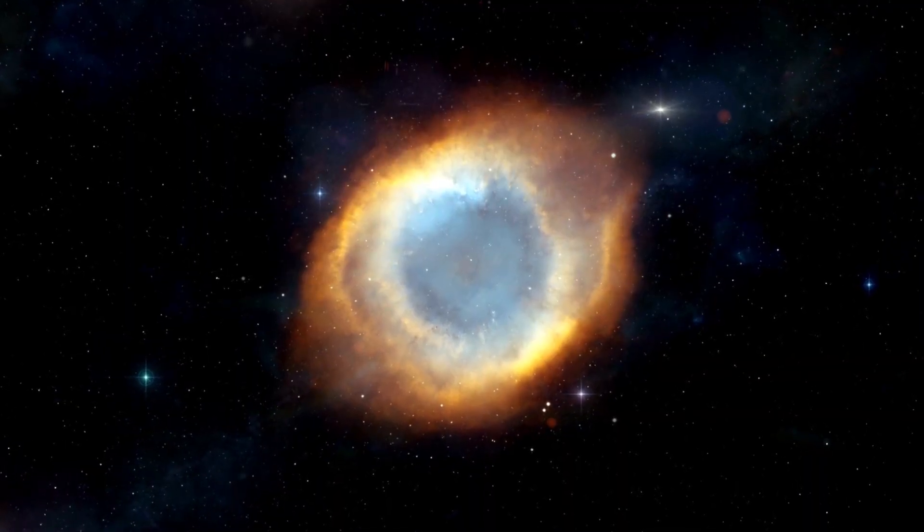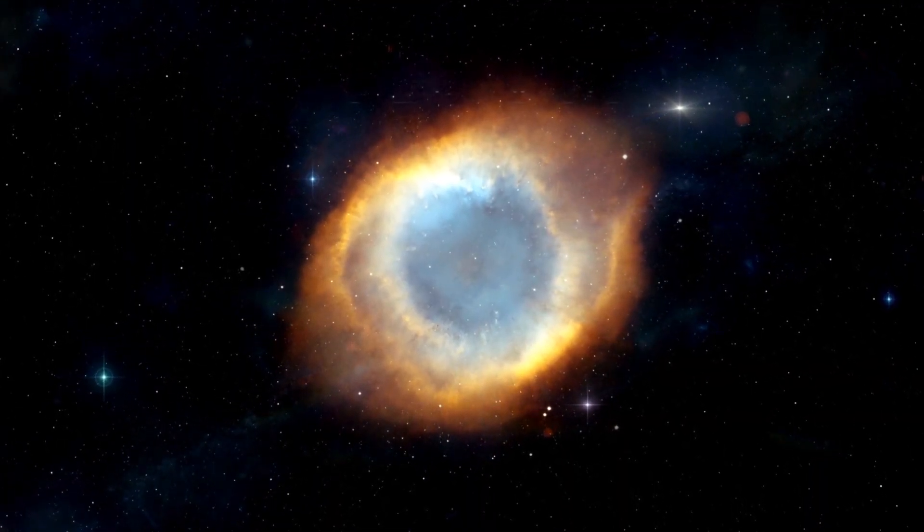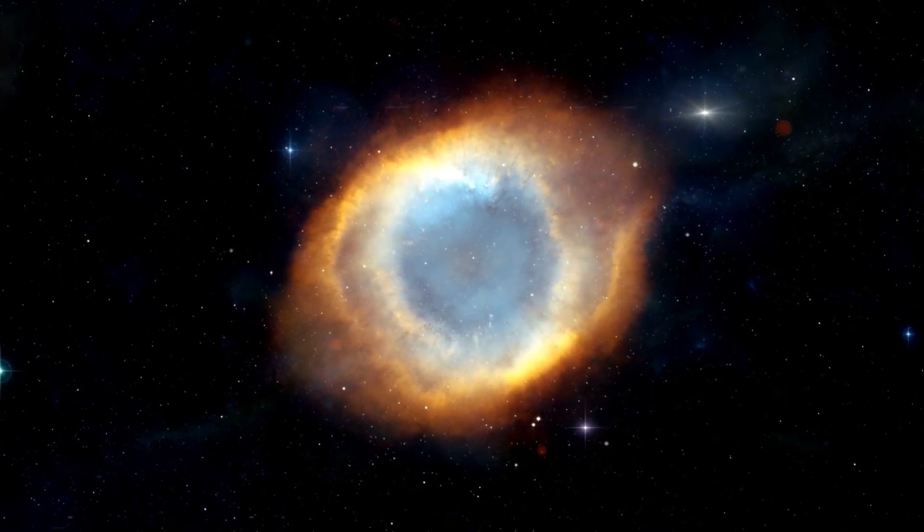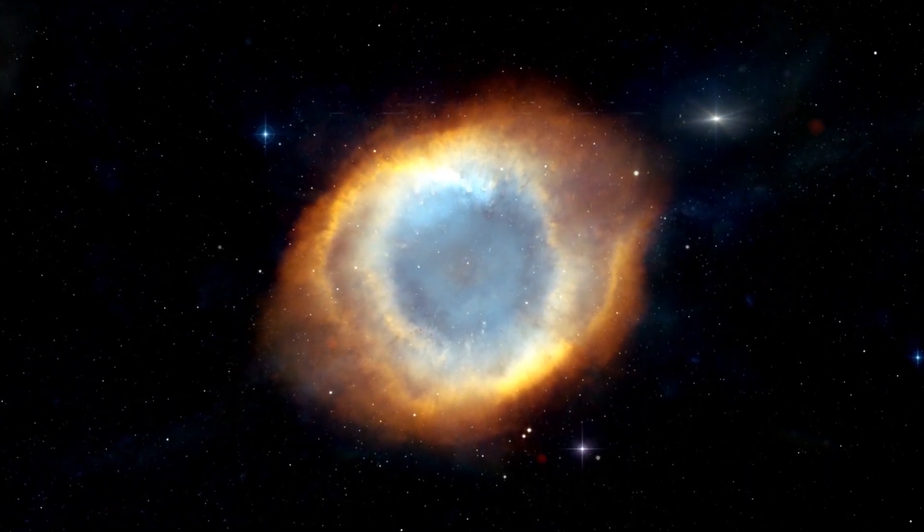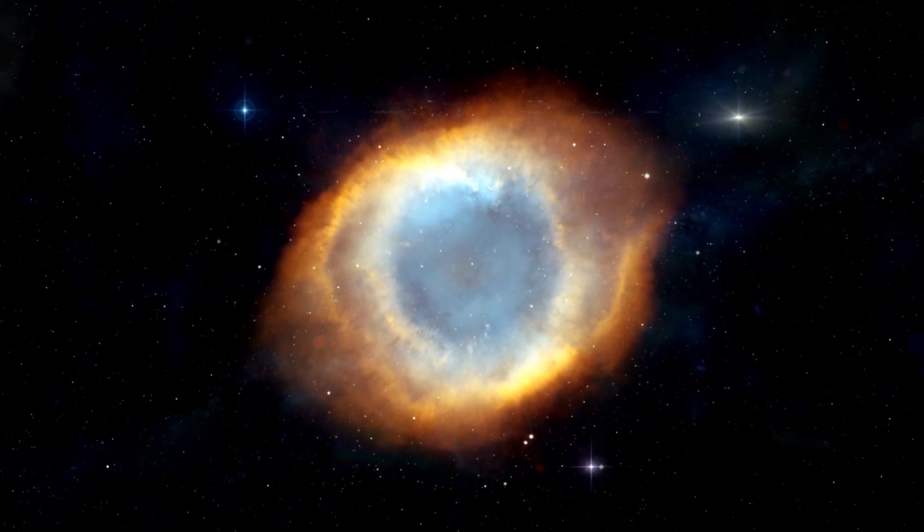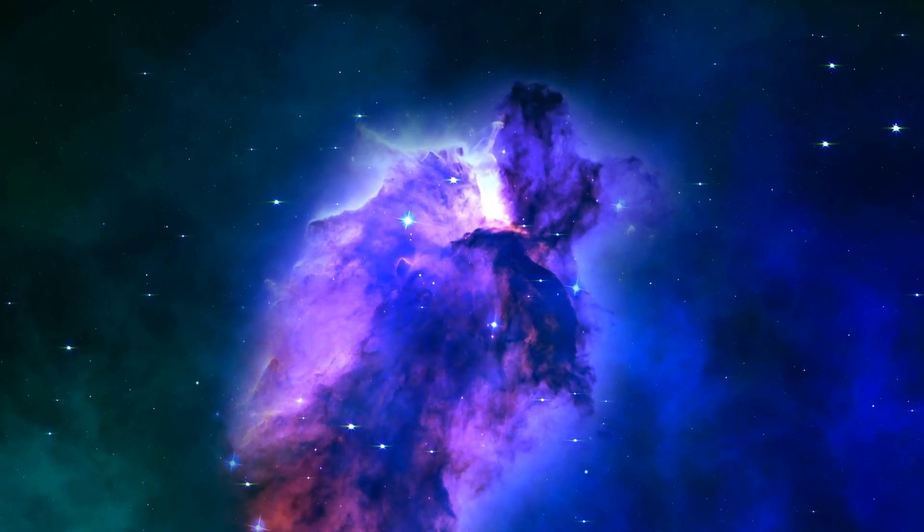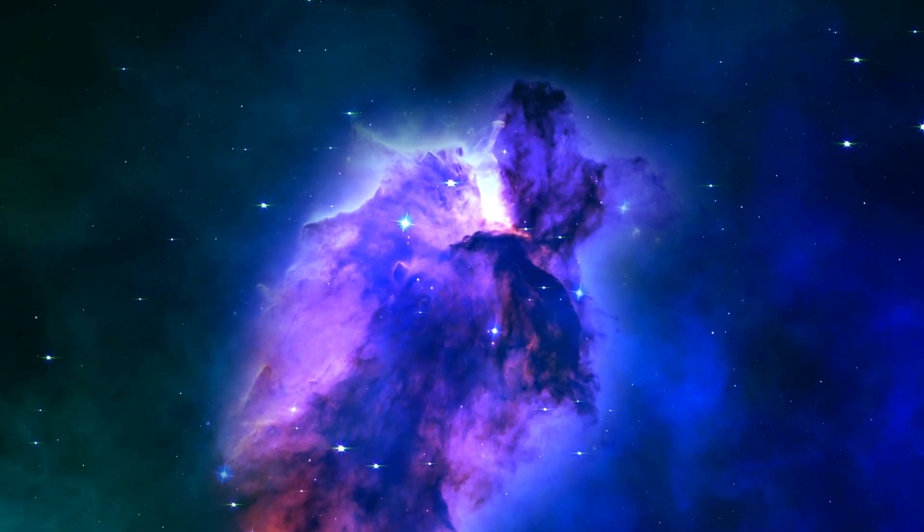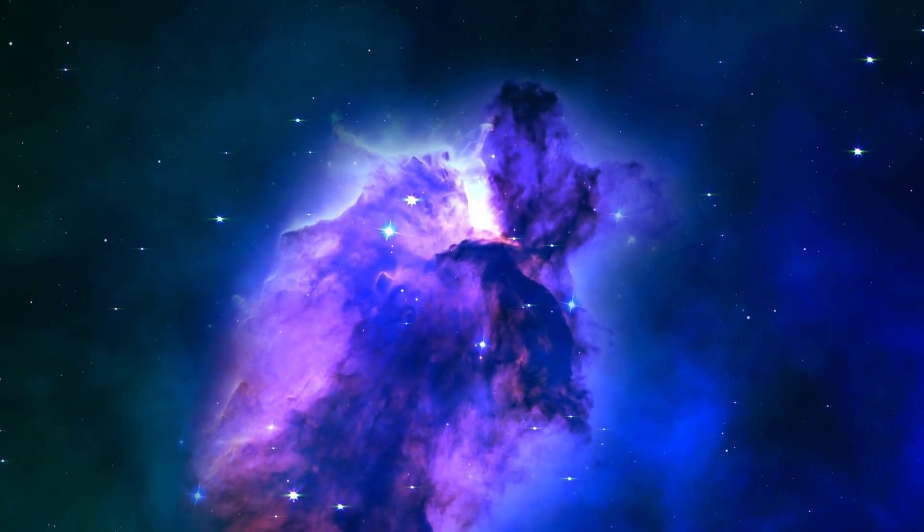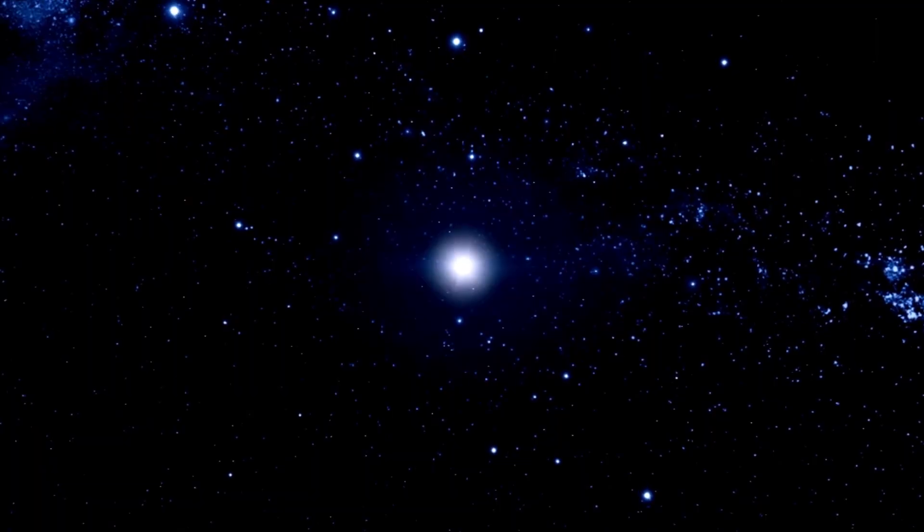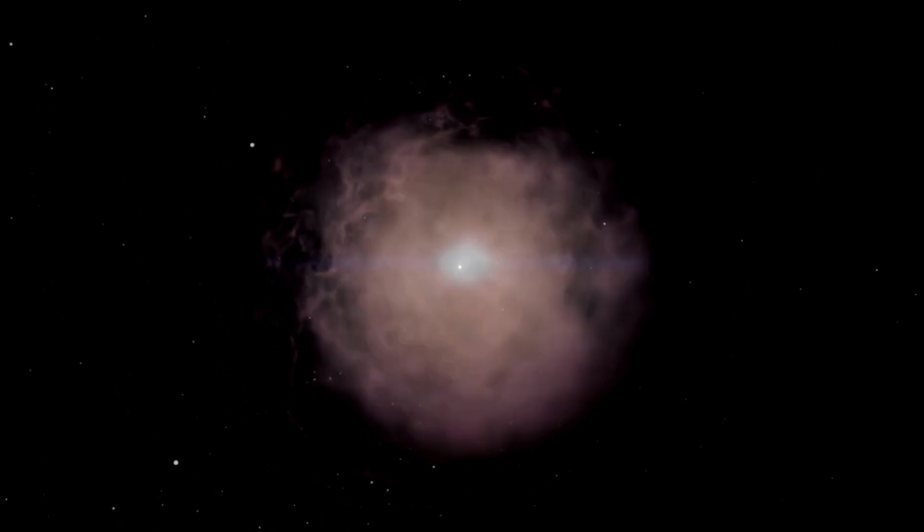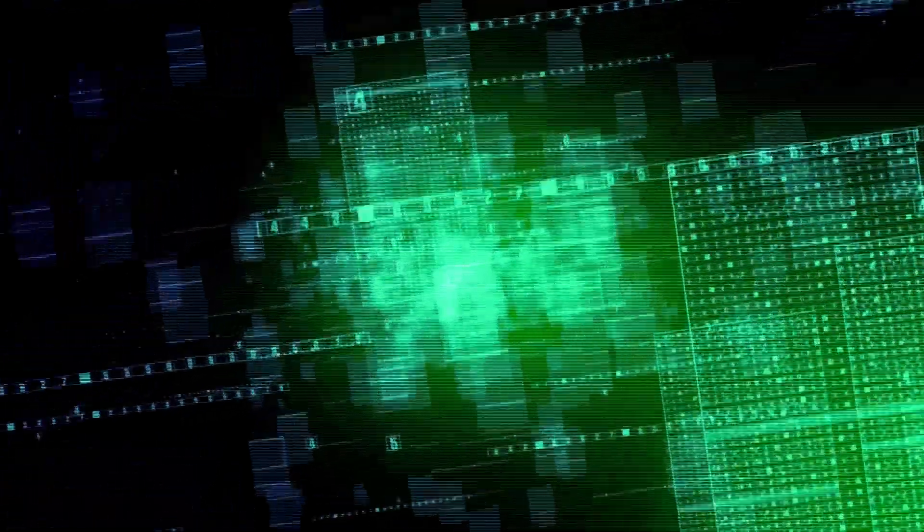In addition to the burst of radiation, the explosion would also create heavy elements like iron, gold, and platinum, which are essential building blocks for planets and life as we know it. These heavy elements would be dispersed into the surrounding galaxy, enriching the gas and dust and providing raw materials for future generations of stars and planets. Overall, a Type II supernova explosion like DES-16C2NM would have far-reaching consequences for the surrounding universe and would play a crucial role in shaping the evolution of galaxies over time.